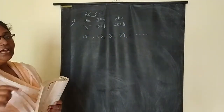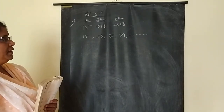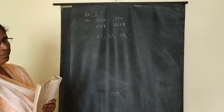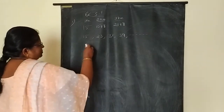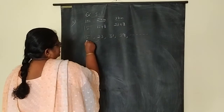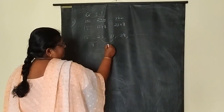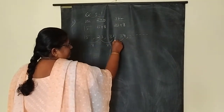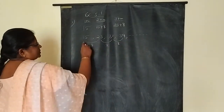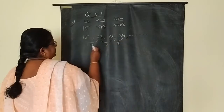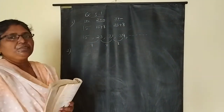Is it an AP? To check, we find the common difference. The difference between each consecutive term is 8, 8, 8 — the common difference is equal throughout. Therefore, it is an AP.